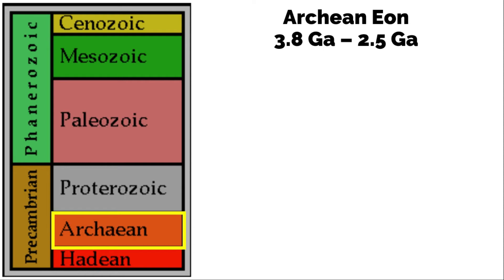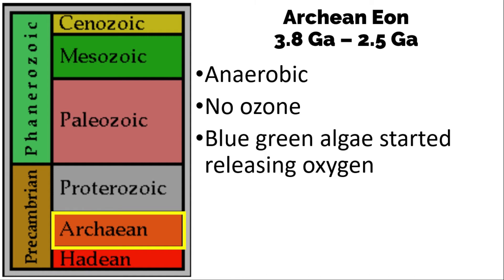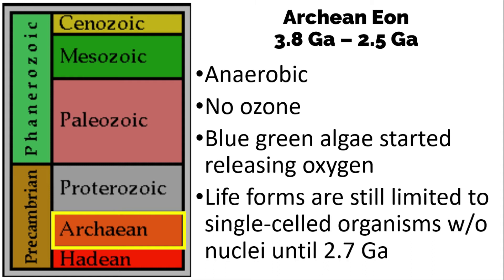Next, we have the Archean Eon, from 3.8 GA to 2.5 GA. Here, anaerobic respiration is evident, meaning cellular respiration without the use of oxygen. In this eon, there is no ozone layer — remember, the ozone layer protects life on the surface of the Earth from harmful UV rays, which may have allowed life to emerge only from the oceans. Photosynthetic prokaryotes, or blue-green algae, emerged and started releasing oxygen to the atmosphere. Life forms remained limited to single-celled organisms without nuclei until 2.7 GA, when eukaryotes emerged.